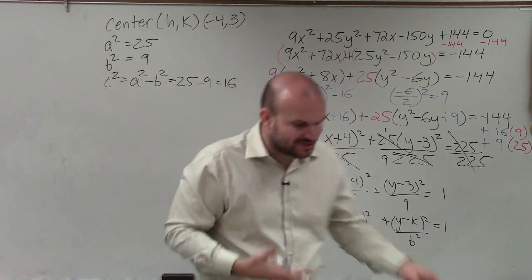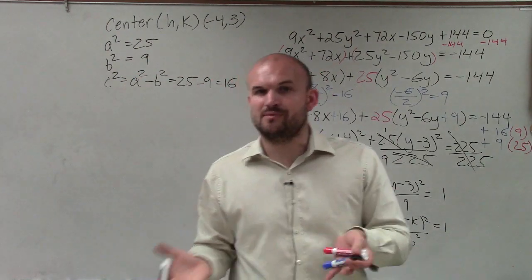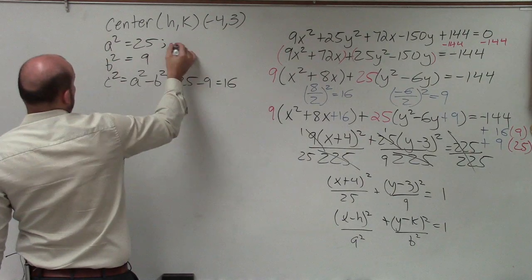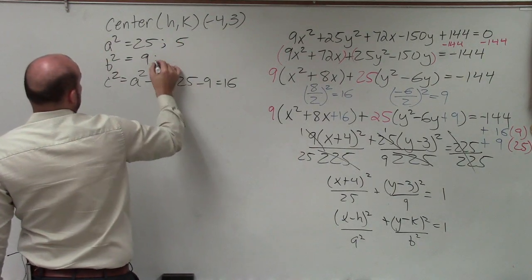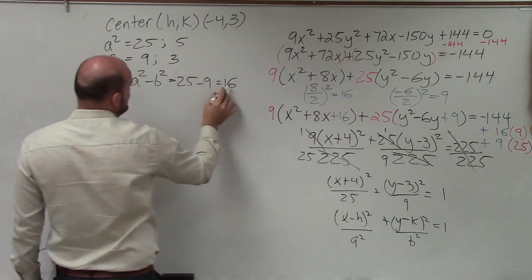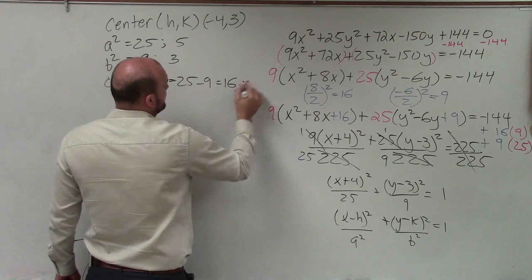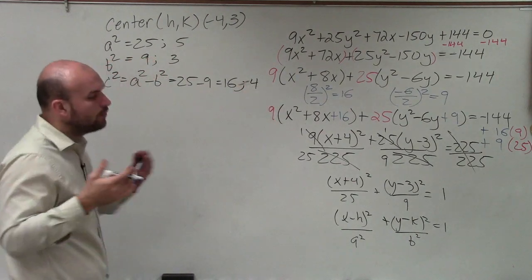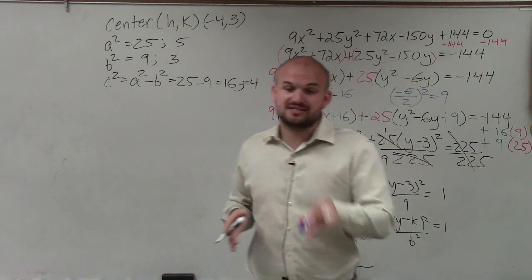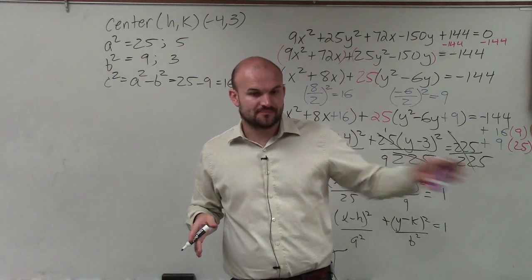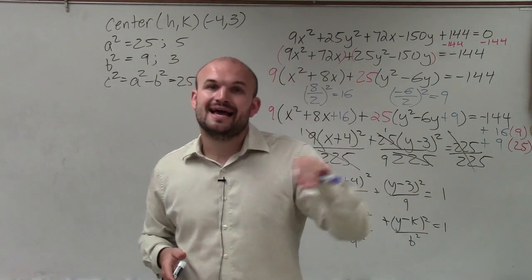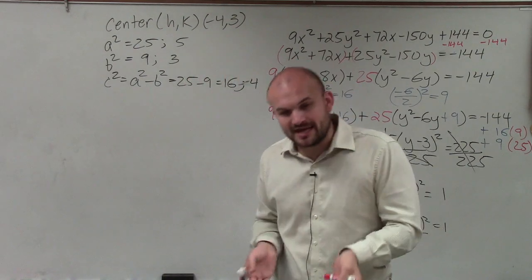So a² and b² and c² are helpful, but really what we want to know is what is a, b, and c. So if a² equals 25, that means a equals 5. If b² is 9, that means b equals 3. And if c² is 16, that means c is equal to 4. Now, what does a, b, and c represent? A represents the distance from the center to your vertices, b represents the distance from your center to your co-vertices, and c represents the distance from your center to your foci.